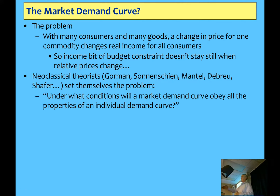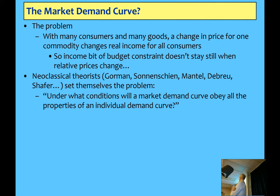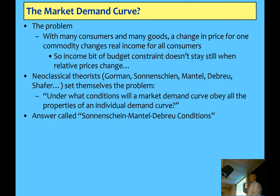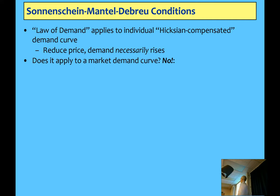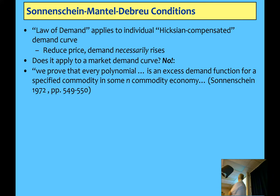With the assumption that income is fixed, you can derive a downward-sloping demand curve. But when it's not fixed, some serious mathematical economists of the mainstream — Gorman, Sonnenschein, Mantel, Debreu, and Schaefer — asked: under what conditions will the market demand curve have the same properties as the individual's? They said, 'We prove that every polynomial is an excess demand function for some specified commodity in some n-commodity economy.' That means: starting from conventional economic theory with individuals all having downward-sloping individual demand curves, when you add up and get the market level, you get a squiggly line — not a downward-sloping curve. And that is a remarkable conclusion that never turns up in textbooks.